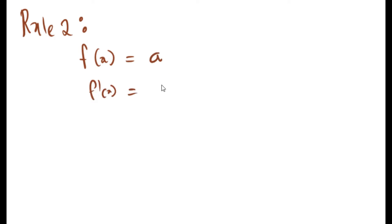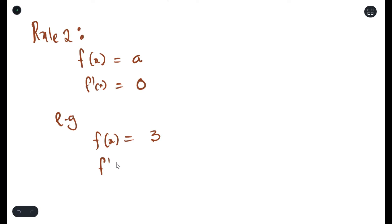Now Rule 2: we say that if you have a function and the function is just a constant, the derivative would equal zero. The derivative of any constant is always zero. For example, if I have a function and let's say this function is 3, the derivative of this function will just equal zero.